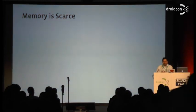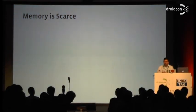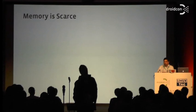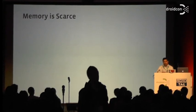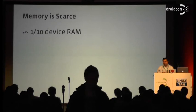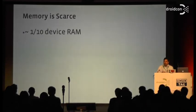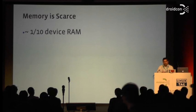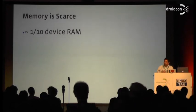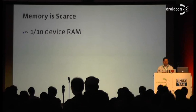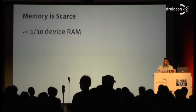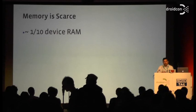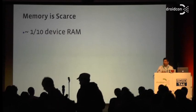Although device memory hasn't gotten a lot bigger in recent years — it used to have 380MB, 512MB, now we have 1 gigabyte phones, even some 2 gigabyte phones — you don't get all that memory. The device manufacturer sets the heap size for your application, and that heap size is usually about one-tenth of the memory on the device. So if you have a 1 gig phone, you have 128MB maybe, maybe 64MB.